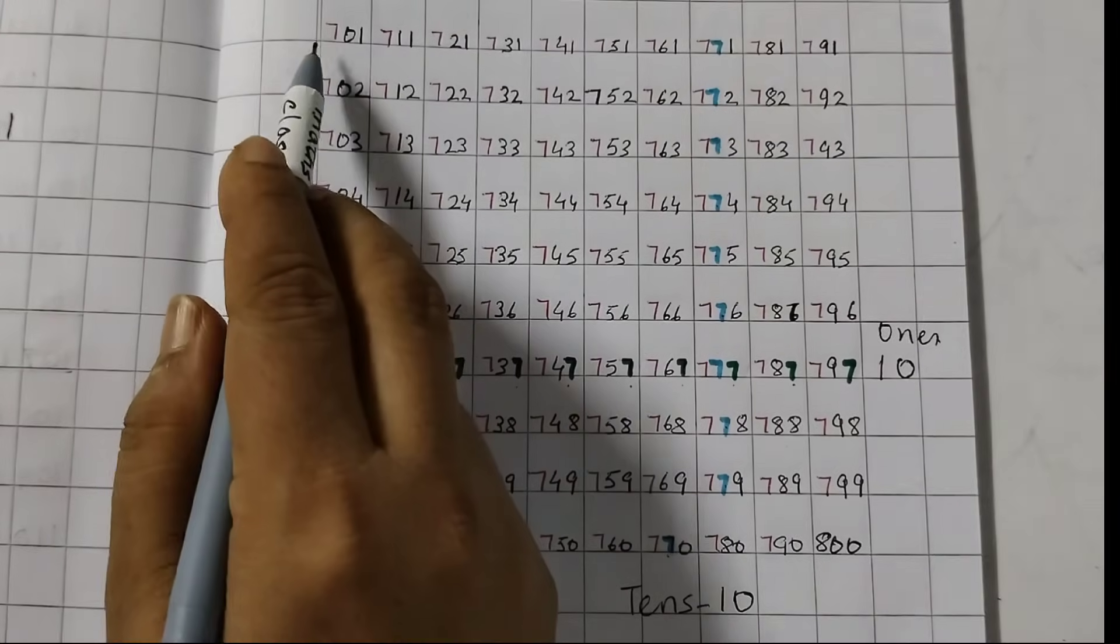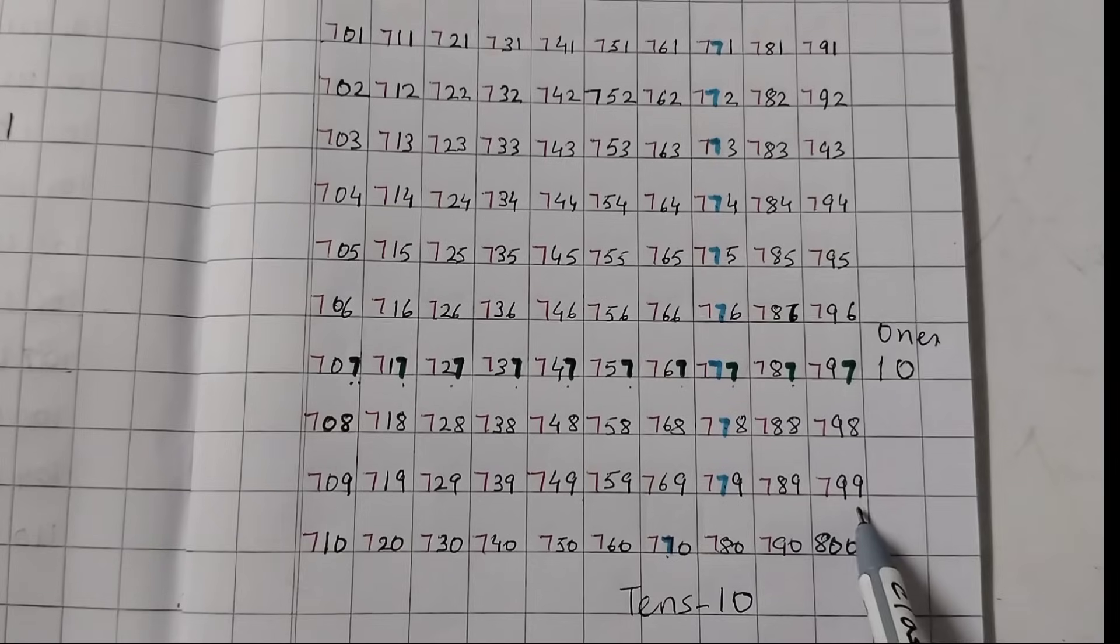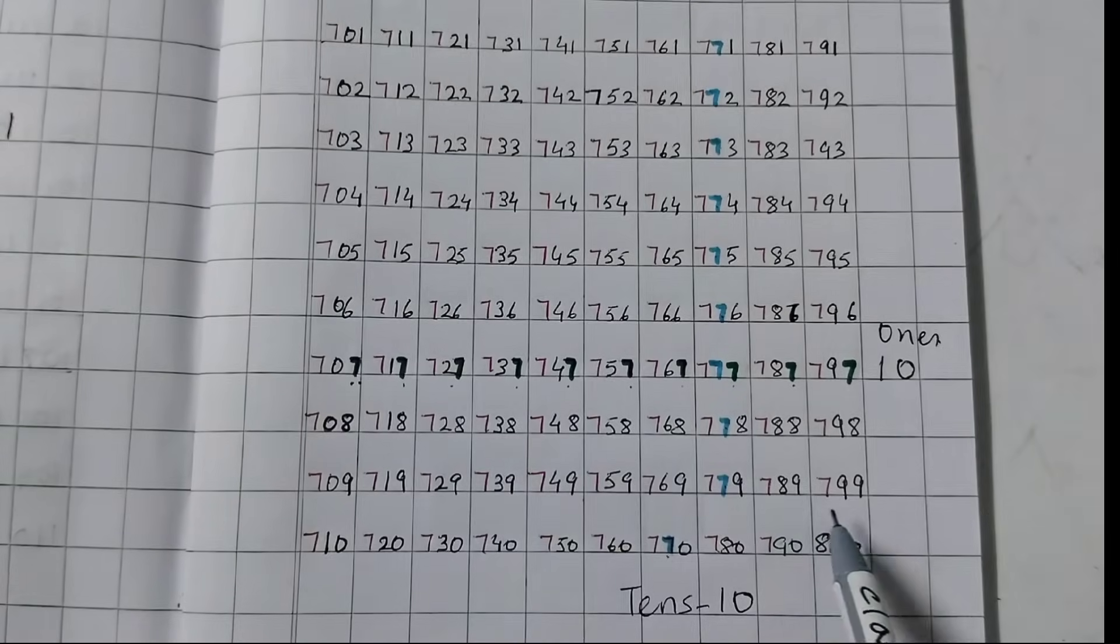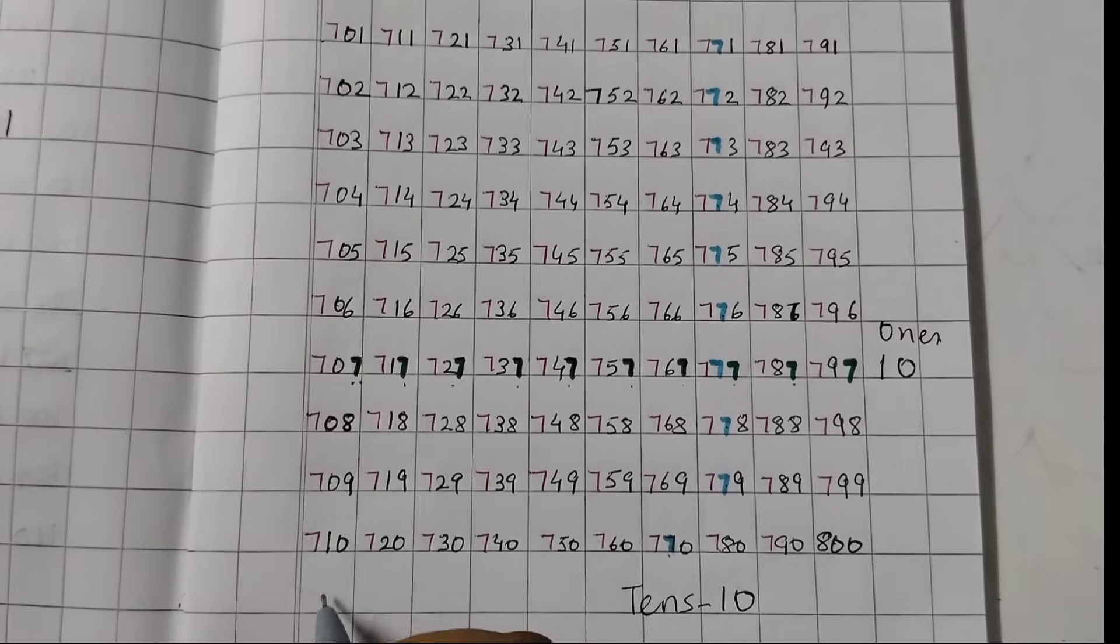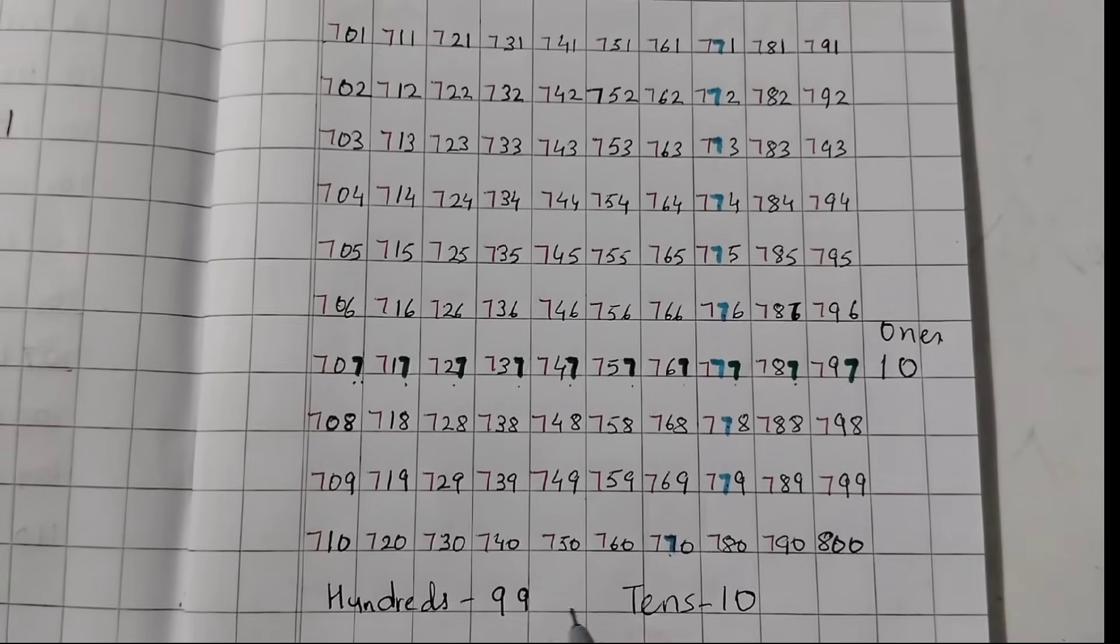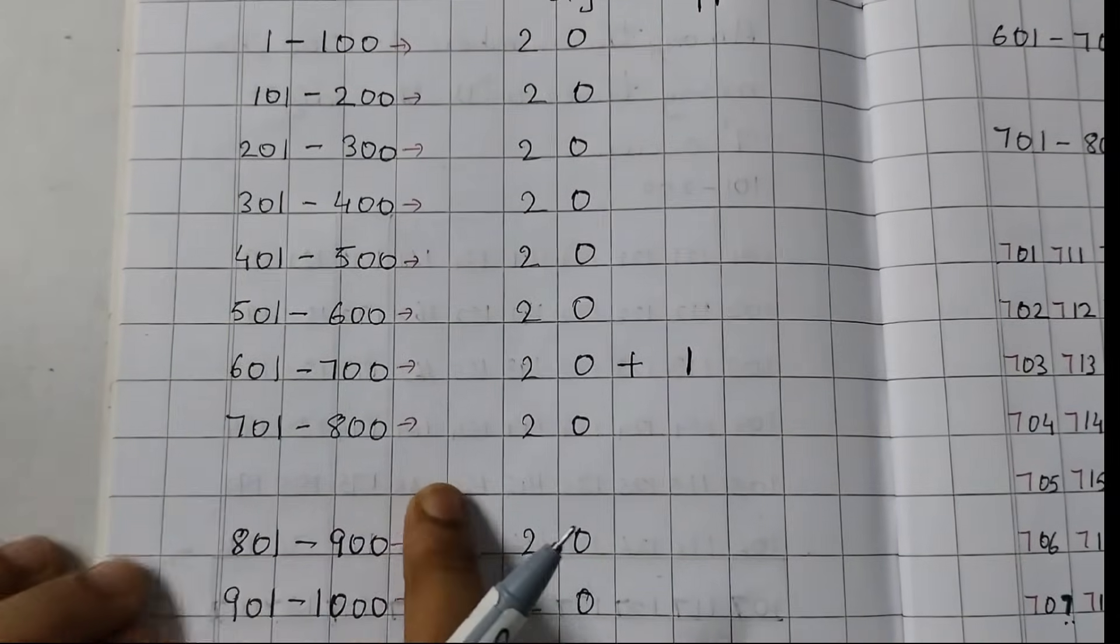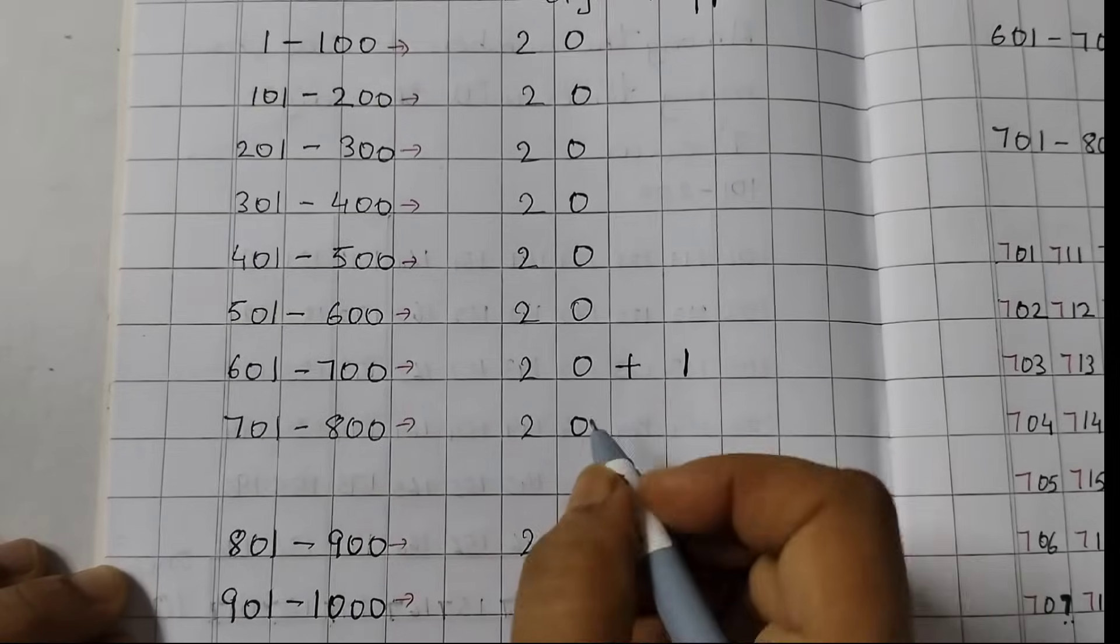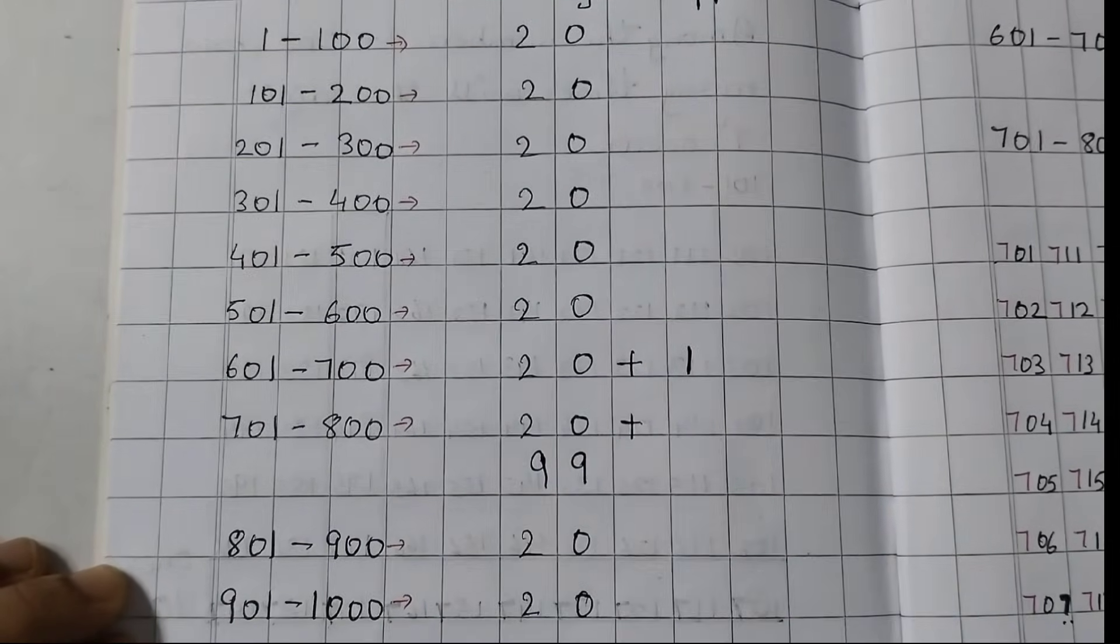Now, we will see the hundreds place. See, it starts from 701 and goes till 799. That means 1, 2, 3, 4 and it goes till 99. That means hundreds place, it appears 99 times. Hundreds place, it appears 99 times. So, it's 99 plus 10 plus 10. So we have already written here, 701 to 800 is 20 plus 99.